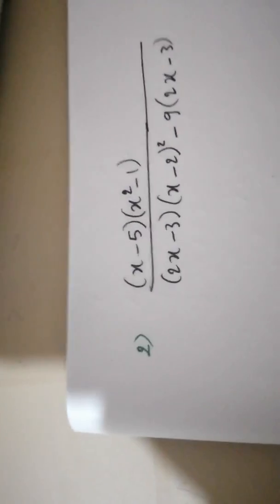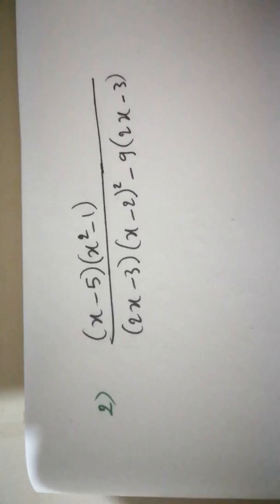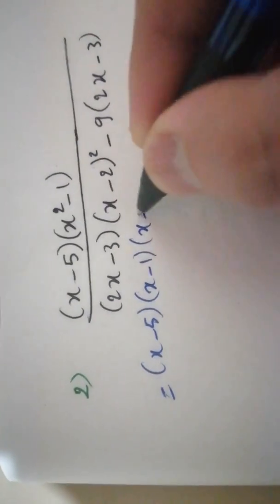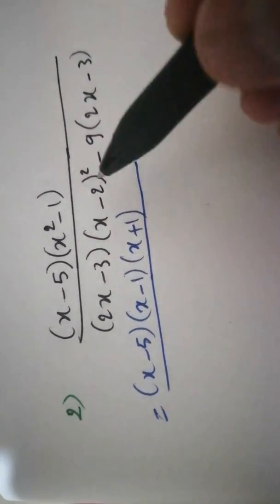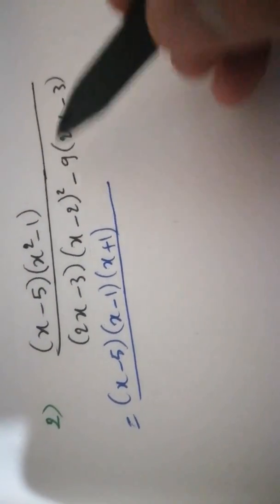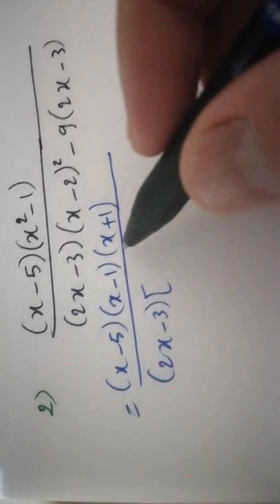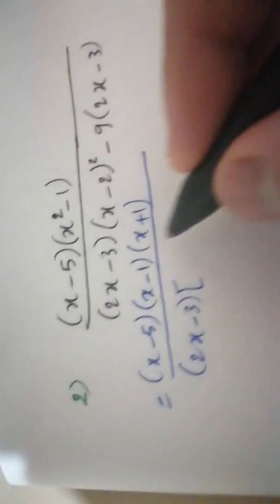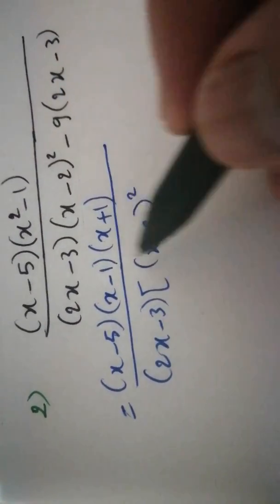The next fraction. Similarly, we have to factorize above and below where possible. We have x squared minus 1, which becomes (x minus 1)(x plus 1). In the denominator, we have two terms with a common factor of (2x minus 3). So you put (2x minus 3) outside and open a big bracket. From the first term, dividing by (2x minus 3), it remains (x minus 2) squared.